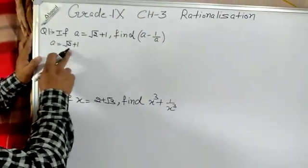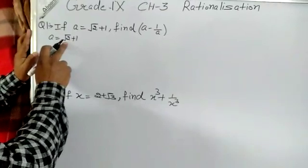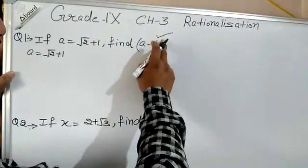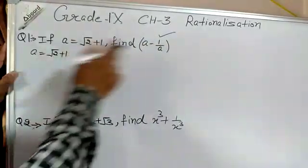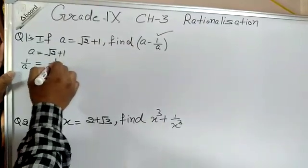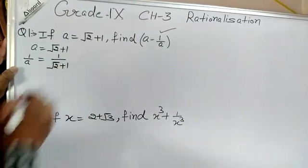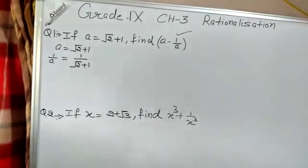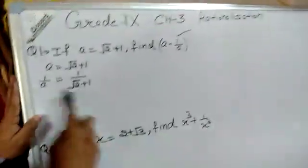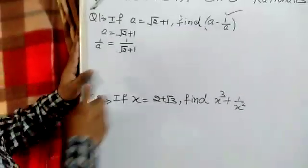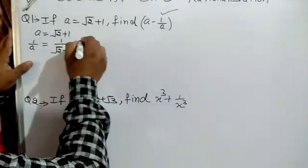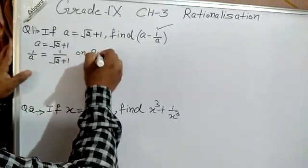a is given to us, that is √2 + 1. But we are interested to find the value of a − 1/a. Now, 1/a is equal to 1 upon (√2 + 1). You can see that here the term under the root is in the denominator. So what we have to do? We have to use the rationalization process. So on rationalizing the denominator, we get: